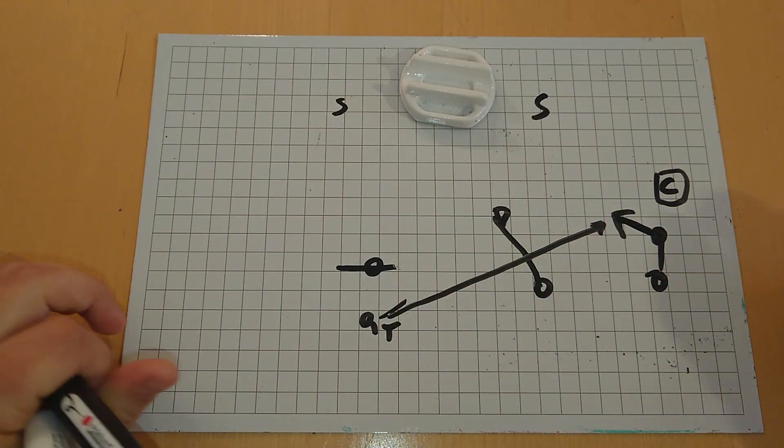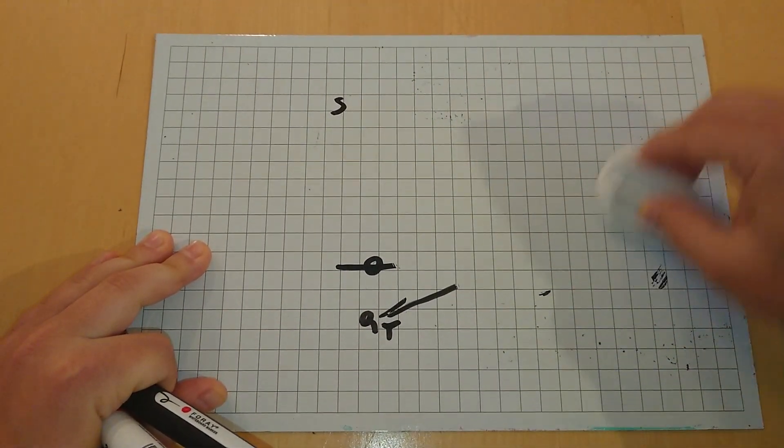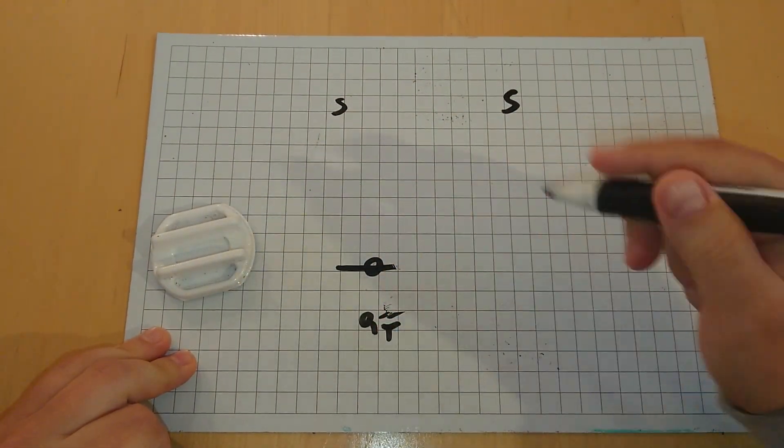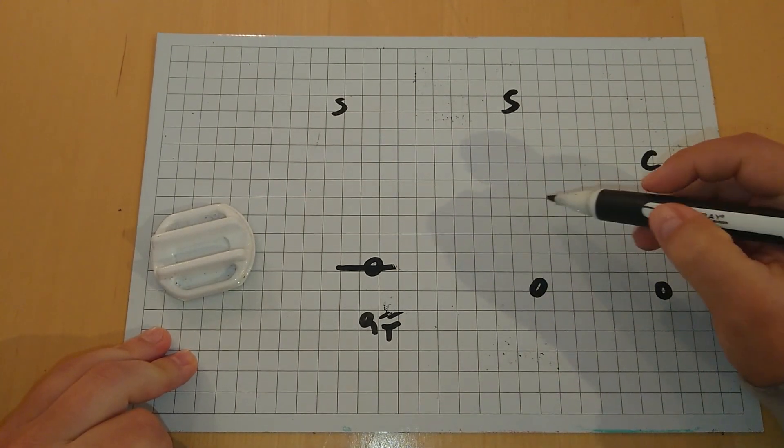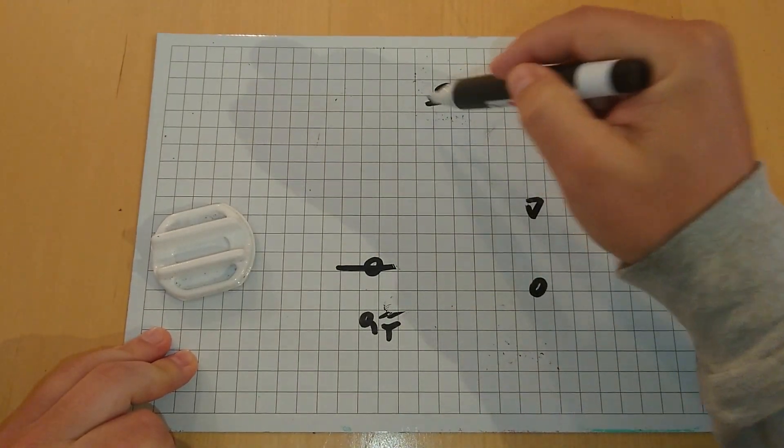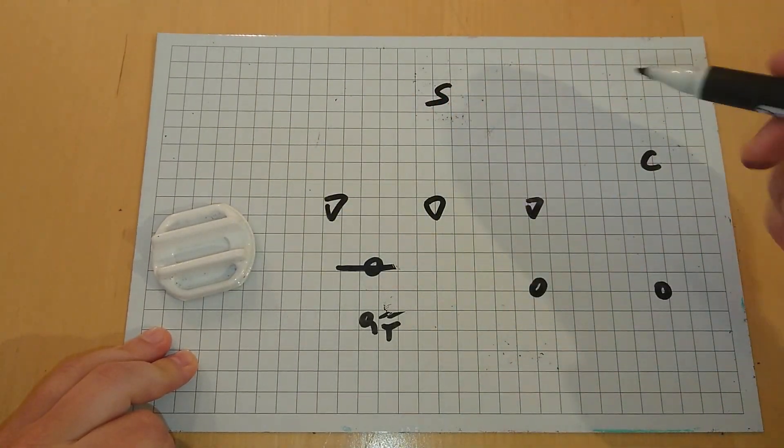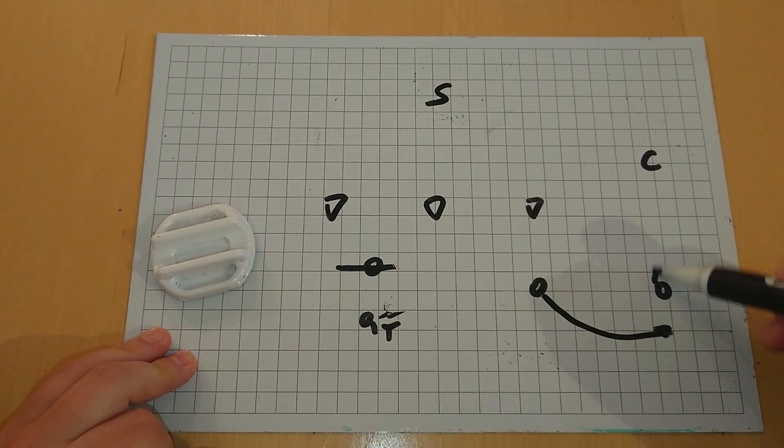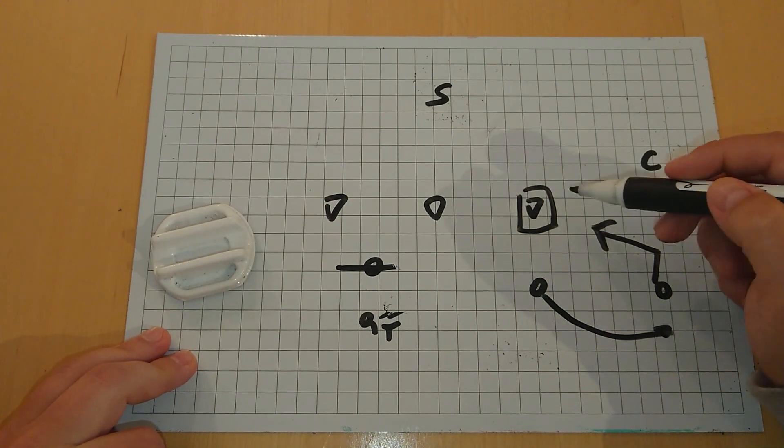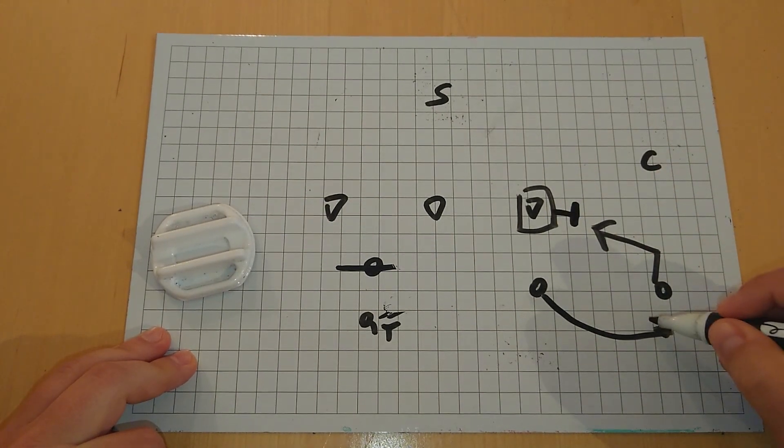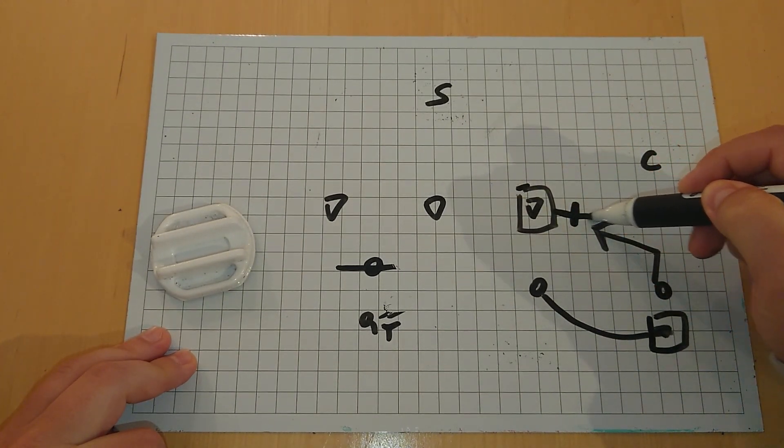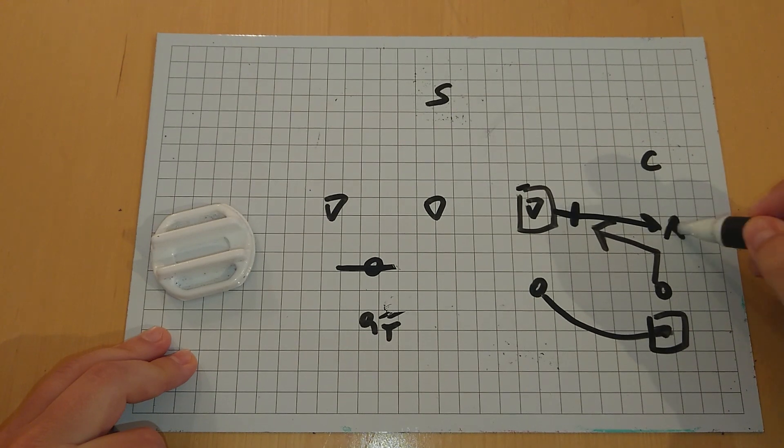Also a great way to attack man coverage. Just in case you're wondering how this slant concept could look versus a cover three look where we have maybe a linebacker not here anymore, safety up top, then we have him out here, this I like to play with bubble slant. This is a straight horizontal stretch for him. If he stays on the slant, we're gonna hit the bubble.